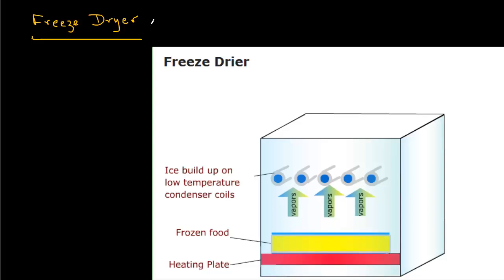By sublimation, we mean that ice converts directly into vapour and does not melt into liquid. So, one needs fairly low pressures inside the freeze dryer.